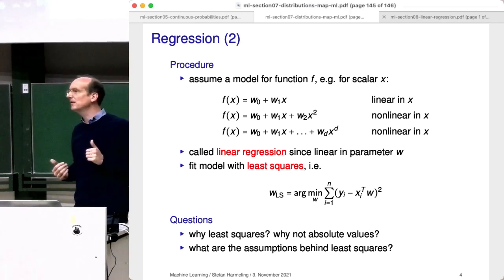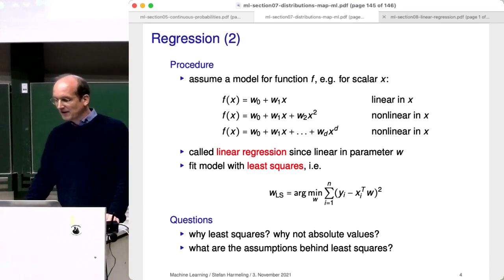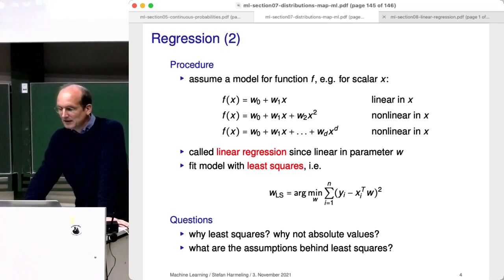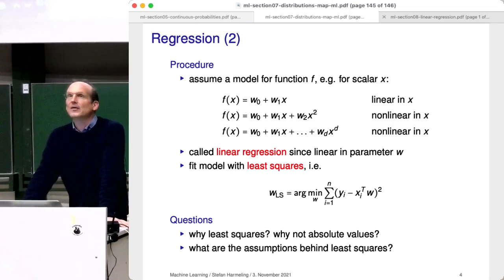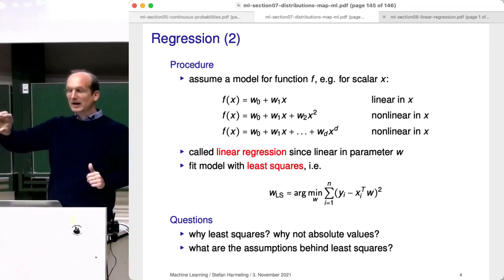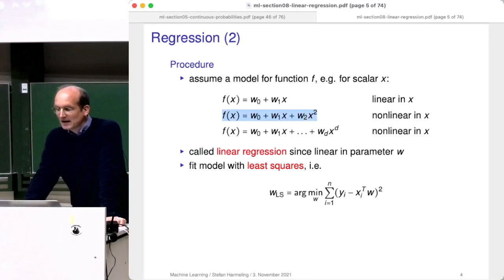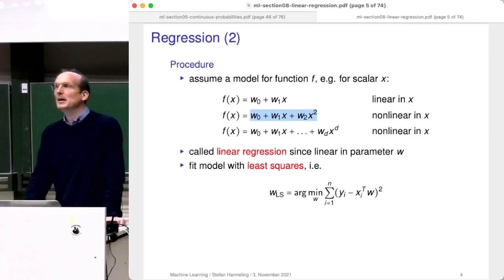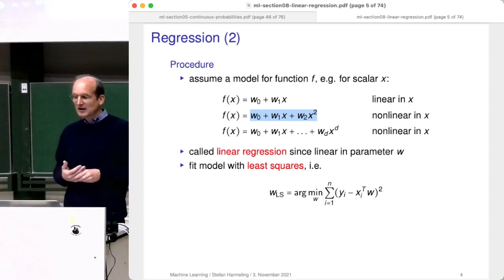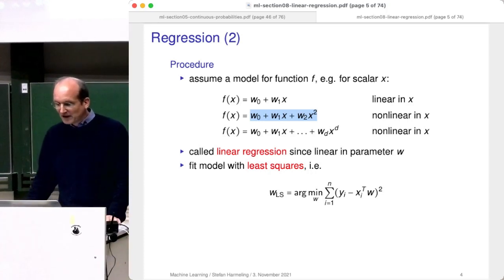Here's another example: a parabola — a non-linear function in x — with three parameters. However, it is linear in the parameters I want to learn. It's just the inner product of the vector [w0, w1, w2] with [1, x, x²]. As I said — this is a function linear in the parameters. That's why it's called linear regression even when I'm having x squared. In general I can have any polynomial, and it's still linear regression.